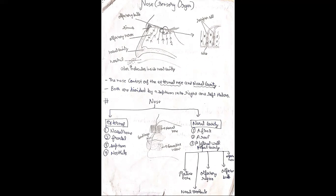Next is the olfactory bulb. In the olfactory bulb, receptor cells and cilia are present. Cilia perform movement, and through this movement, the cilia can easily catch the odor molecules.